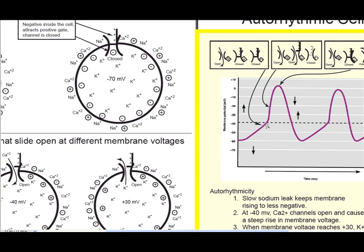The sodium channel opens, sodium comes into the cell, and makes the cell more positive. Then a calcium channel opens; calcium runs into the cell, making the cell more positive still. Once we get up to a positive voltage, a potassium channel opens. Potassium leaves the cell and takes us back down to negative voltages. This sequence occurs over and over in the auto-rhythmic cell, and it has the same general shape as the action potential we discussed when talking about nervous tissue.